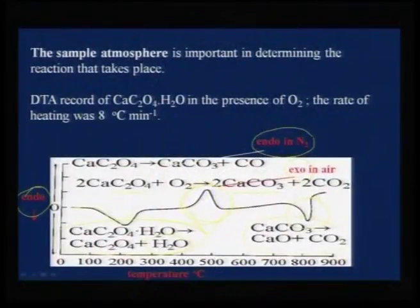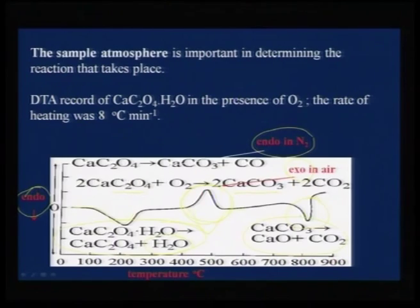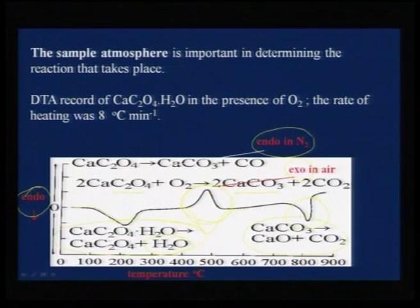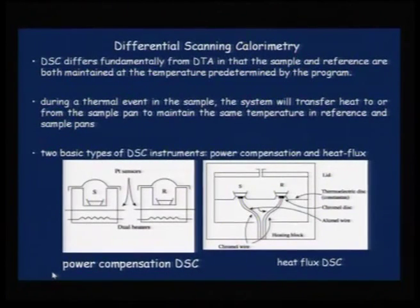In the DTA calcium oxalate example, you see a small endothermic hump corresponding to dehydration (calcium oxalate losing water), and an exothermic peak for unhydrated calcium oxalate going to calcium carbonate. This exo peak can be missed if heating in nitrogen, since without sufficient oxygen it proceeds as an endo peak instead. The middle peak is thus determined by the nature of the purging gas, while the first and last steps are atmosphere-independent.